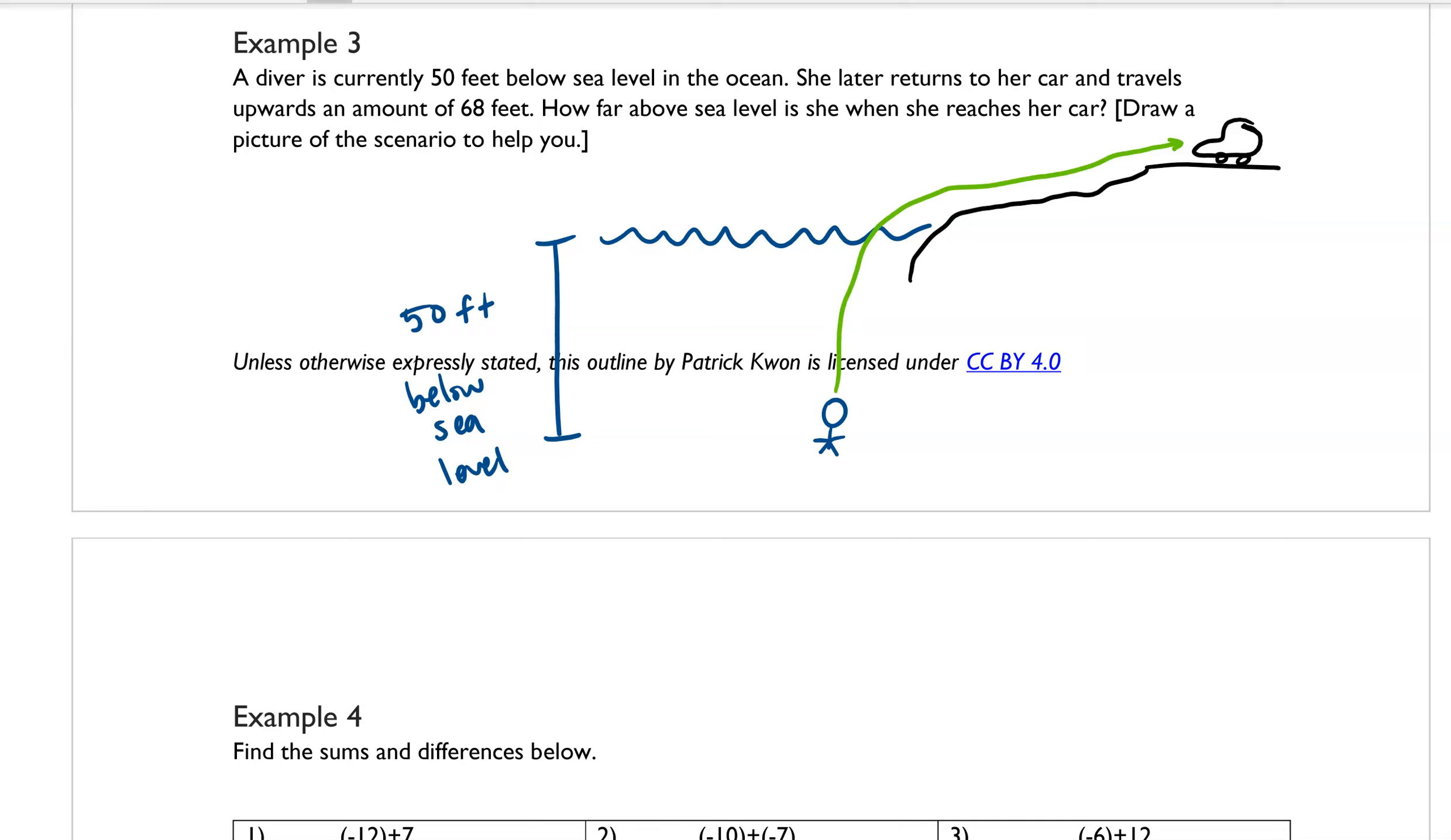So the vertical distance total that she traveled was an upwards direction of 68 feet. So the question is asking, how far above sea level is she? Well, sea level is right here. And so basically, we are trying to calculate the distance from here to here.